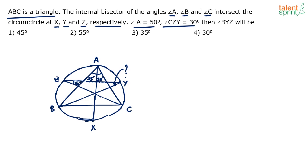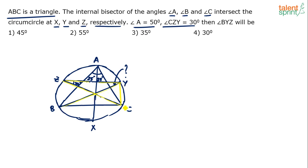So let's try and work on this. Consider the chord CY — let me use a different color. CY is like a chord, and it is subtending an angle of 30 degrees at point Z on the major arc. Now by the theorem, a chord subtends the same angle at any point on the major arc. So the same chord CY will subtend an angle of 30 degrees at point B as well.